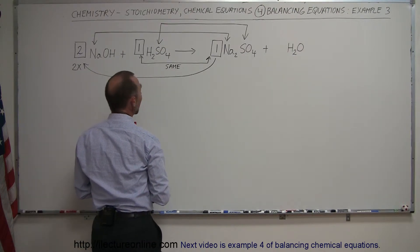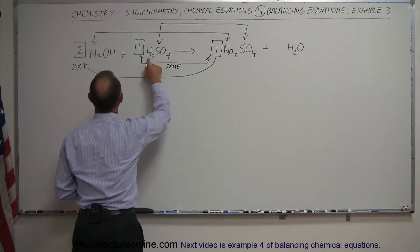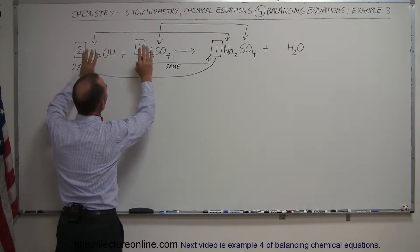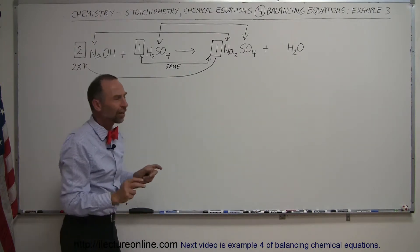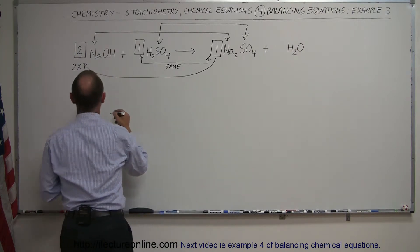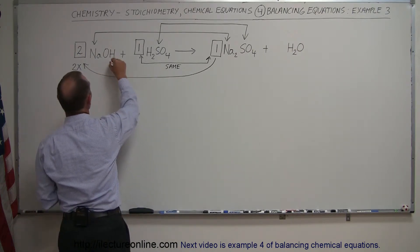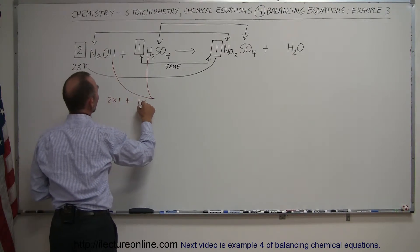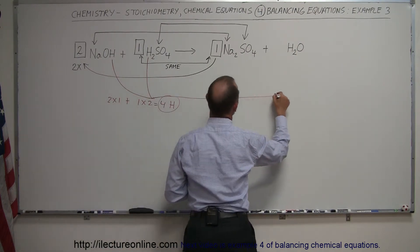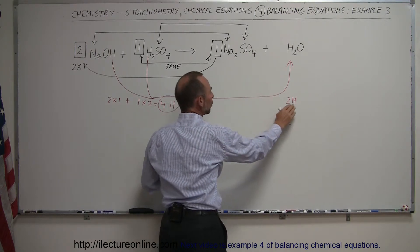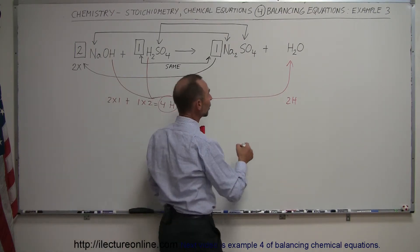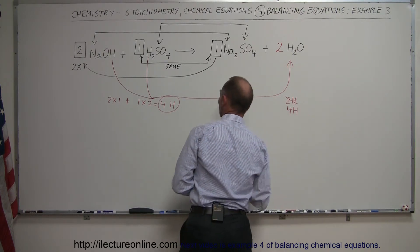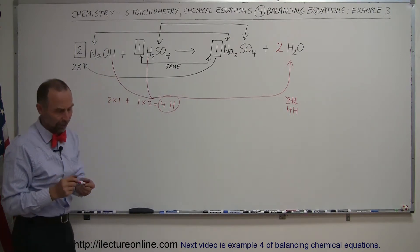We have two hydrogens in sodium hydroxide, two hydrogens per molecule in sulfuric acid, and one hydrogen in water. With a coefficient of two in front of sodium hydroxide and one in front of sulfuric acid, that's two times one plus one times two equals four hydrogens on the left side, but only two on the right. To balance that we need a coefficient of two in front of water: two times two is four, so now we have four hydrogens on both sides — hydrogen is balanced.